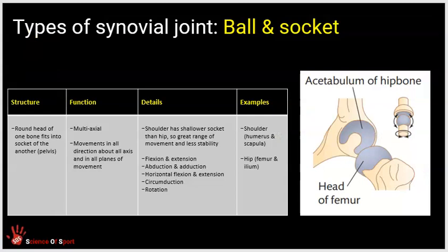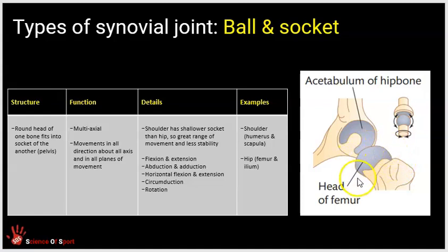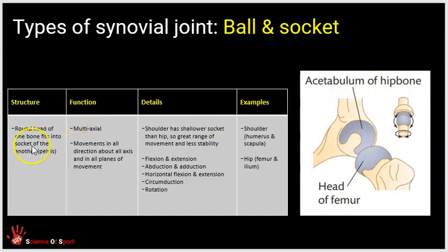The first type of synovial joint is the ball and socket. As shown on the anatomical diagram, a ball and socket joint literally is what it says on the tin — the round ball head of one bone fits into the socket shape of another bone. In this example, the head of the femur fits into the acetabulum, the socket of one of the hip bones. Functionally, ball and socket joints are multi-axial — the widest ranging joint, with movements in all three planes and around three different axes, giving the greatest range of movement of all synovial joint types.